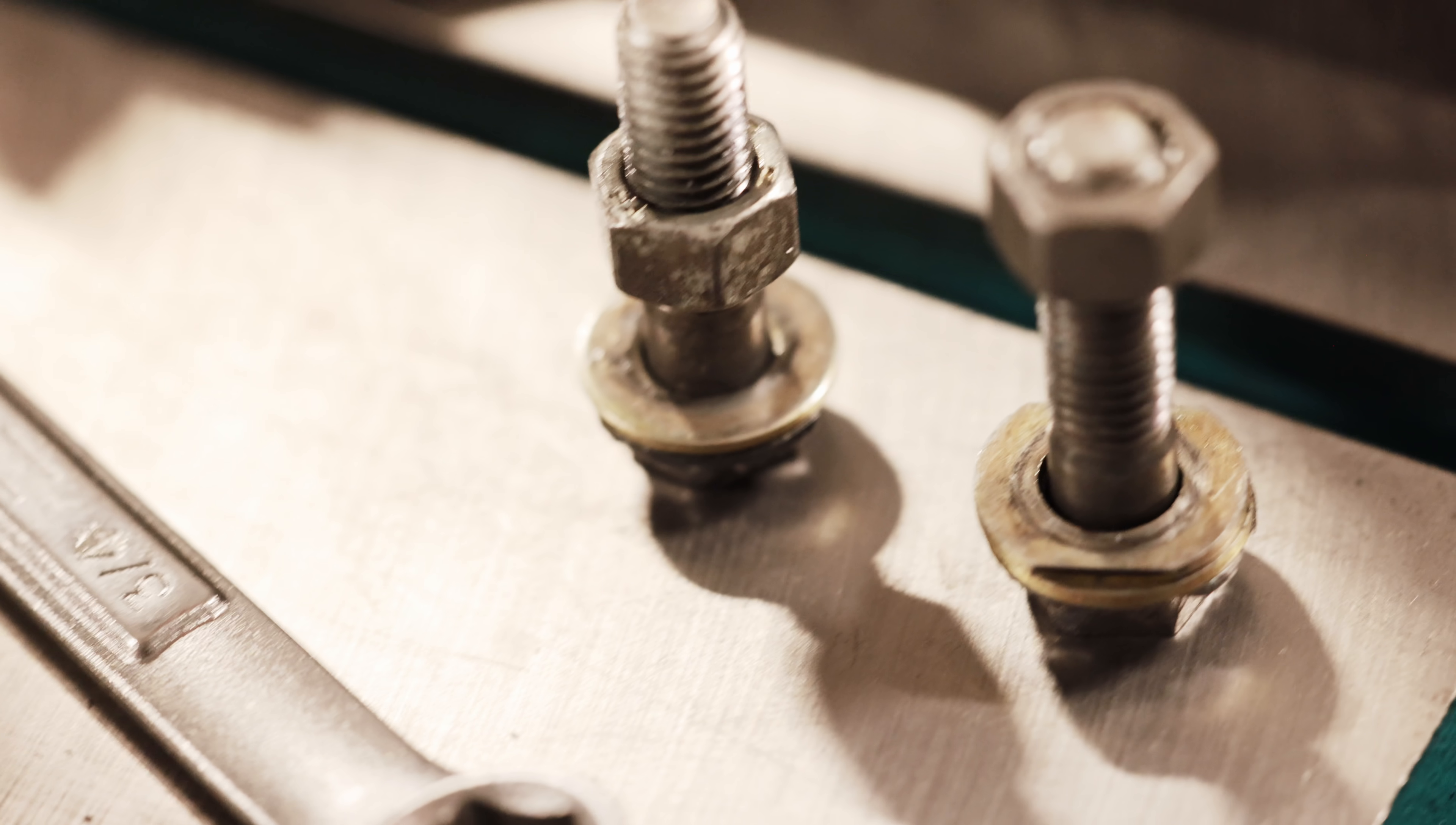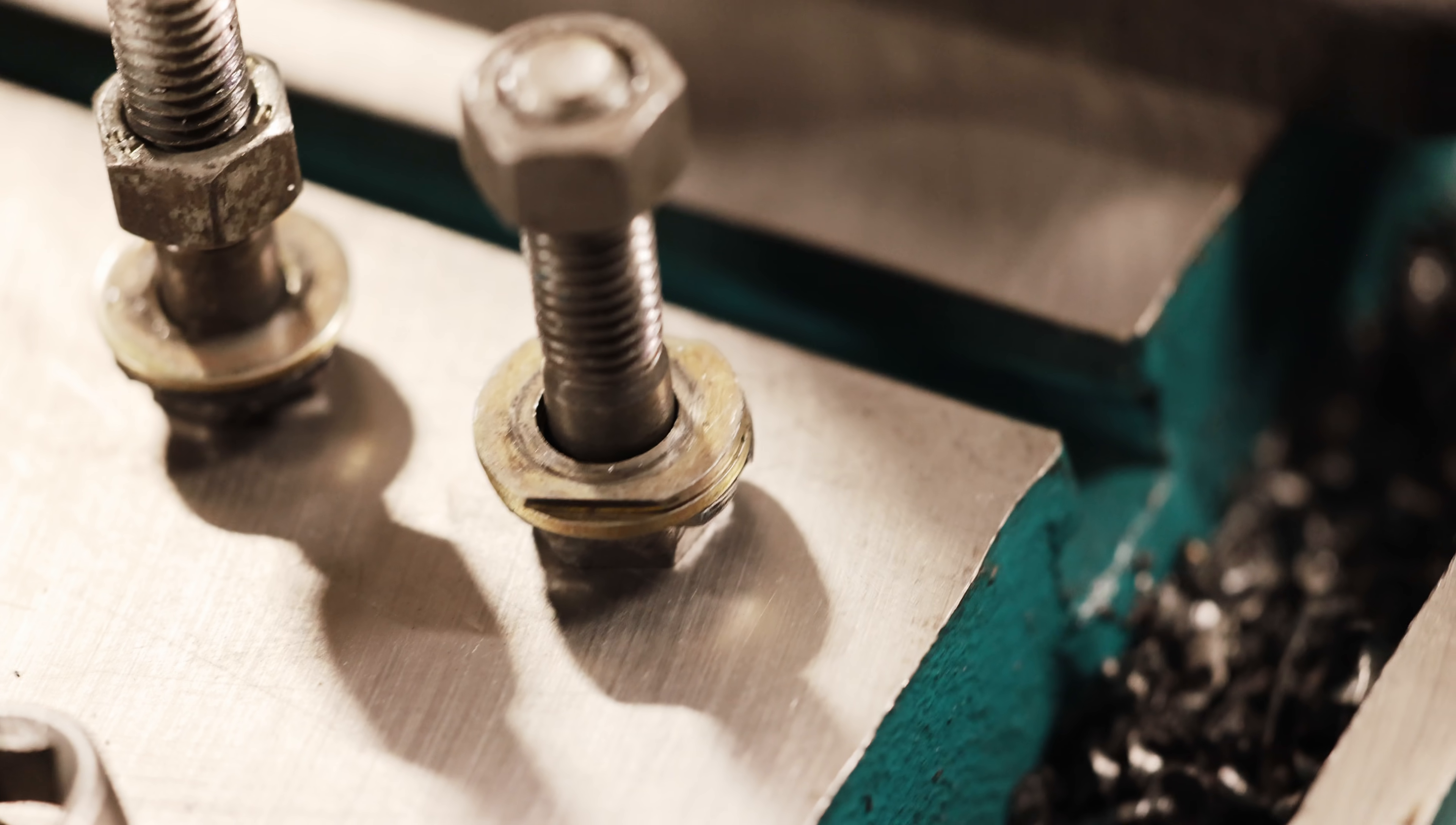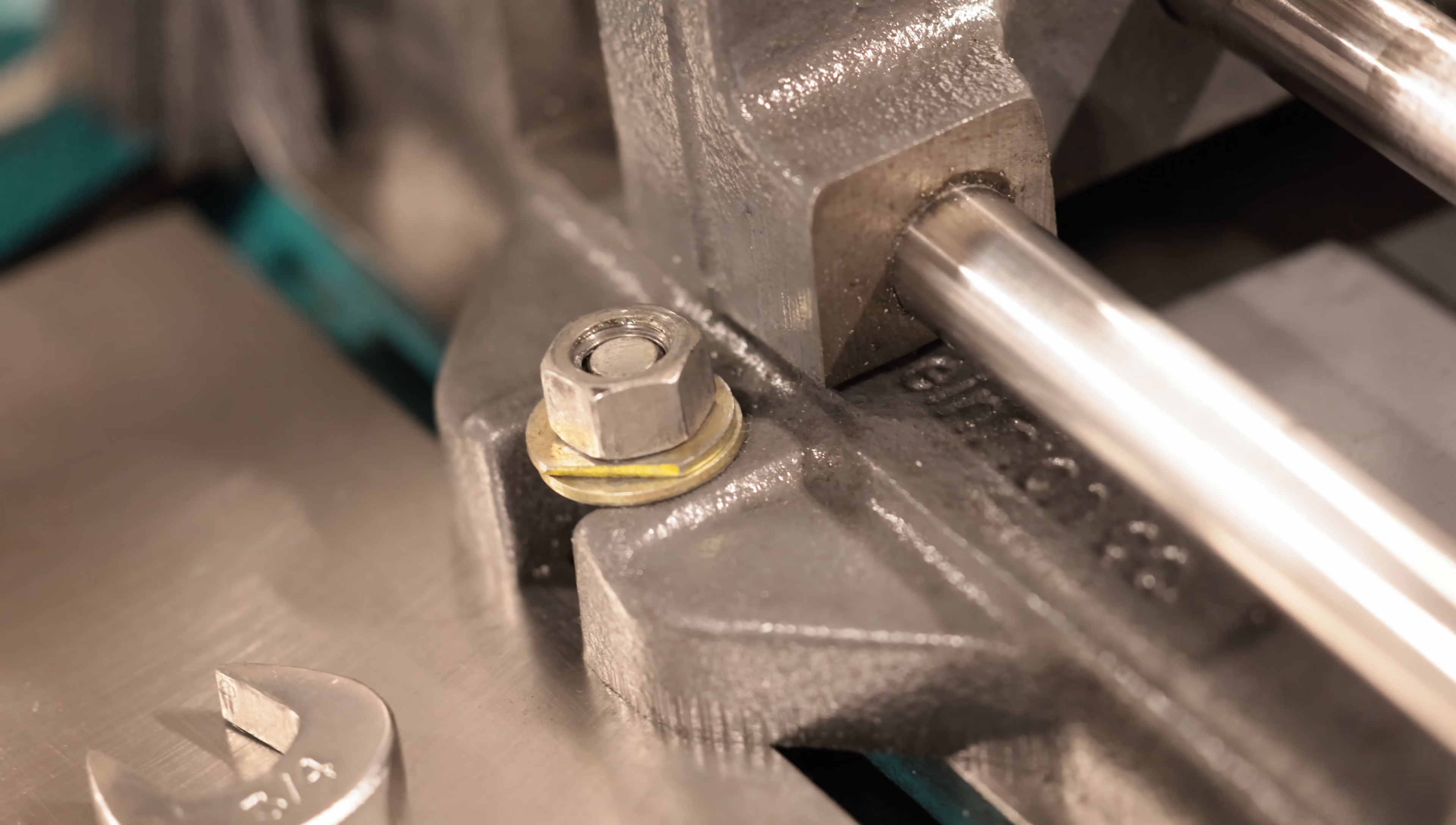I also made my own half inch T bolts. These are needed to lock the drill press vise onto the table.